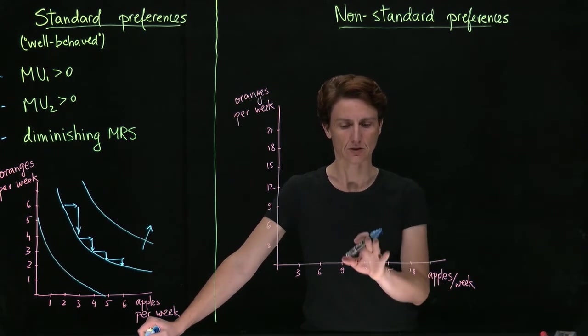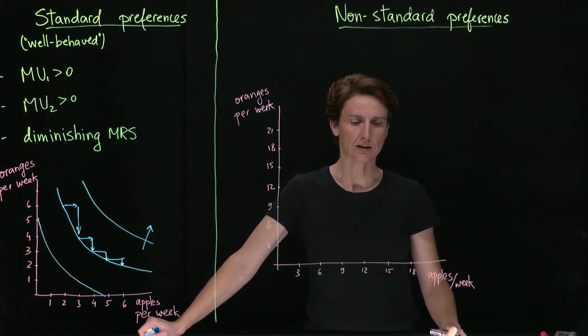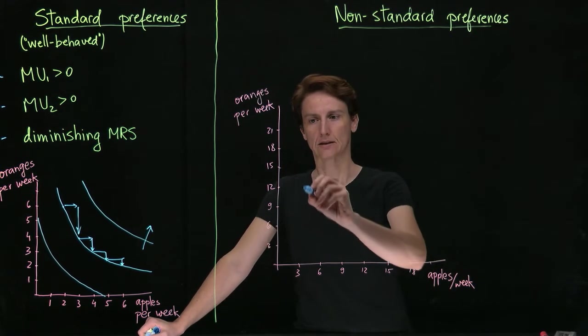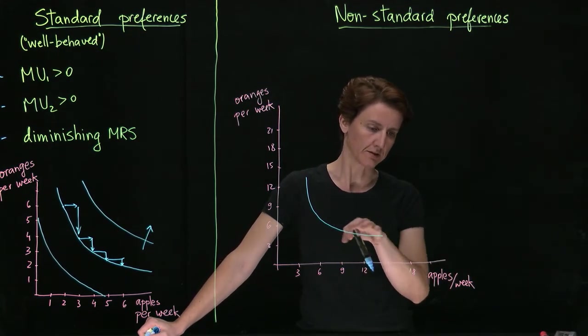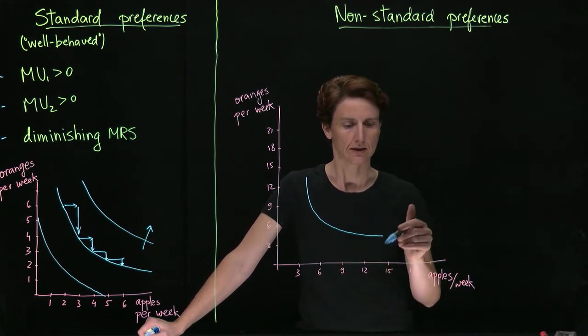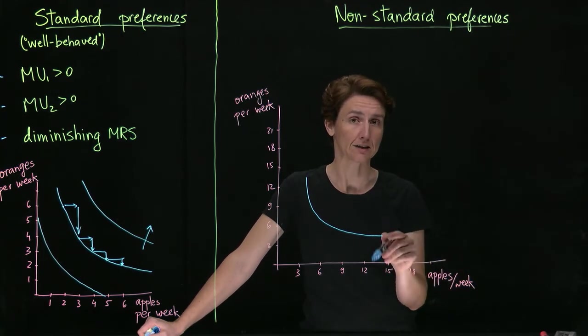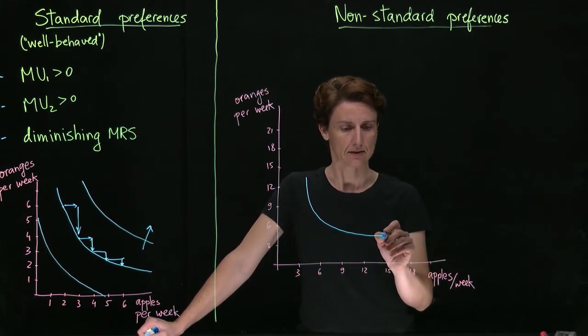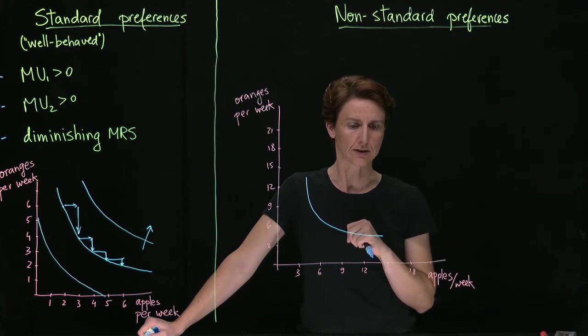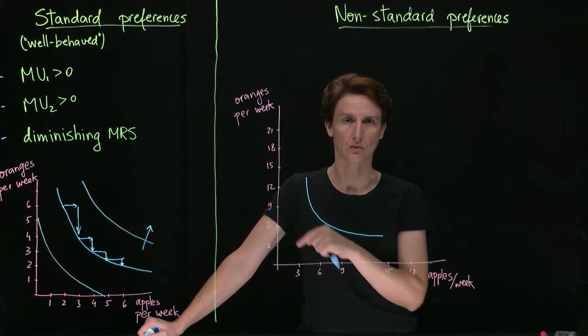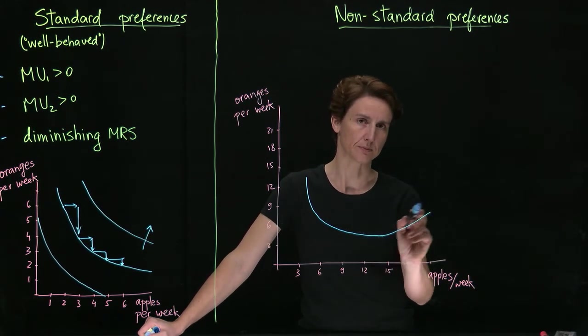What if instead we imagine that as we reach the point where we're not interested in apples anymore, suppose that we were forced to continue to eat them? In that case, once we reach the point of marginal utility zero for apples, we can expect that as we continue to have more, we will have negative marginal utility of apples. In that case, in order to consume more and not have lower utility, we will need to be compensated with more of something that we still like.